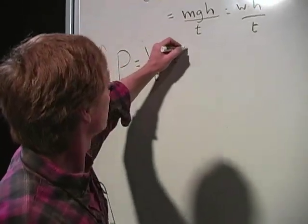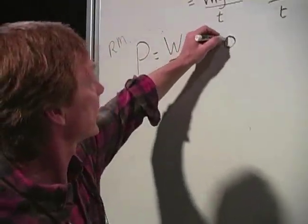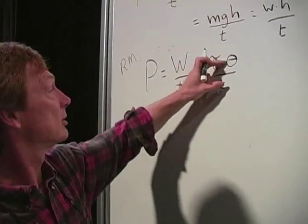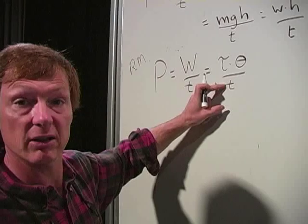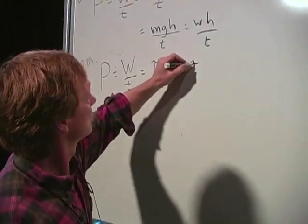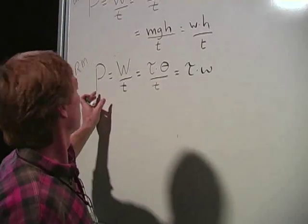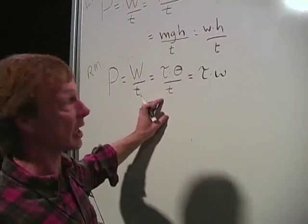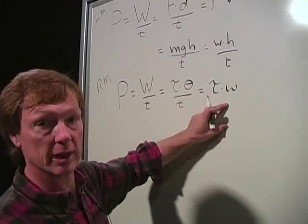Work is torque times the angle you move through. So that's torque times theta over time. And in this case, the rate at which you move through an angle - well, that's the angular velocity, omega. So power is work over time, which is torque times theta over time, which is torque times omega.